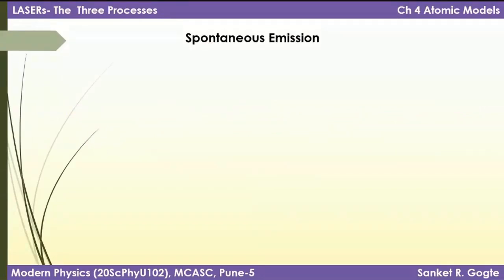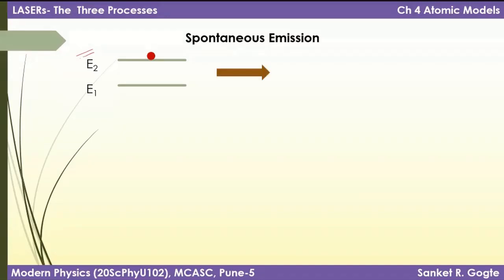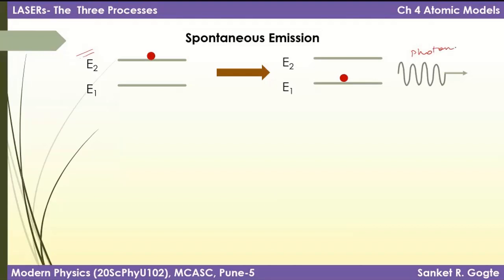Now let's move on to the next process: spontaneous emission. Here we consider one quantum system which is in the higher energy level — the excited state E2. An excited system won't stay there forever; it is going to de-excite. When the atom de-excites, it emits one photon. This process is called spontaneous emission — spontaneous because the atom de-excites on its own, with nothing external causing it. Emission because a photon is emitted.